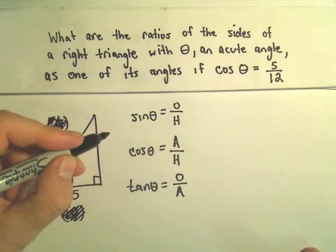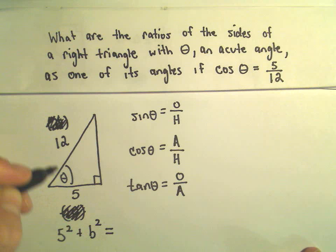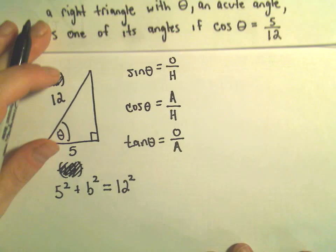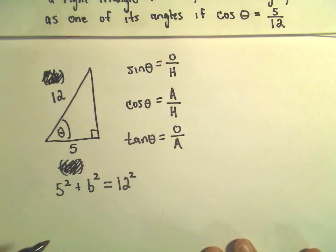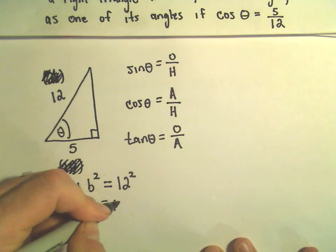Now we can figure out the missing side using Pythagorean theorem. So we can say 5 squared plus this missing side, let's call it B squared, that's going to equal 12 squared. 5 squared is 25 plus B squared, that equals 12 squared, which is 144.